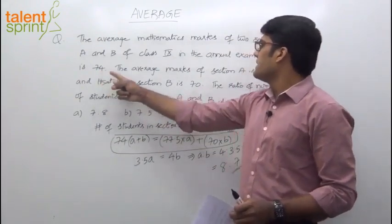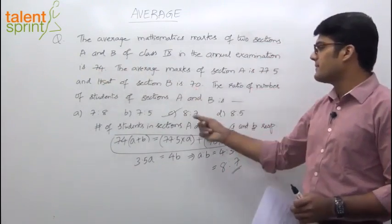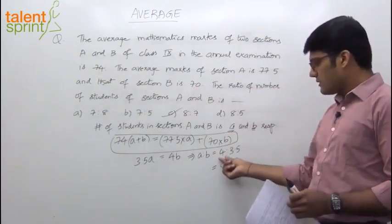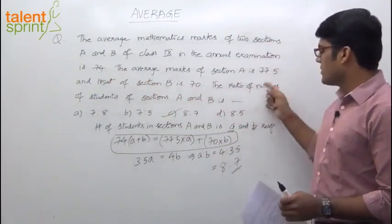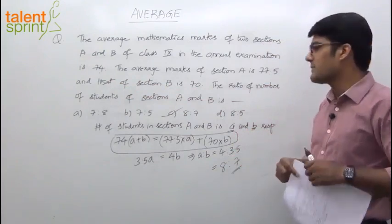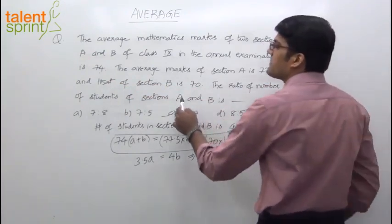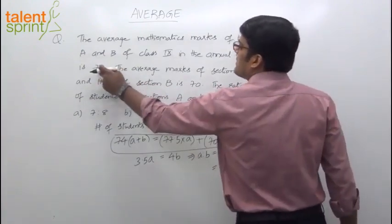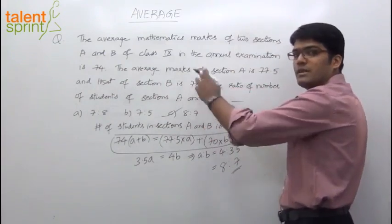70 difference, average is 74. 74 difference, 70, that's 4. Or let me put it here 4. And 74 difference, 77.5 is 3.5. So if you have to take in the reverse order, you understand? We want the number of students in A and B. So the number of students in A will be the average of both sections and the average of B. It should be in the reverse order.